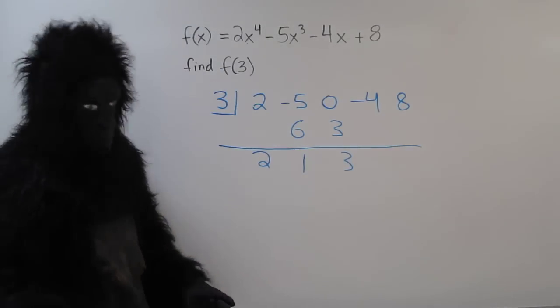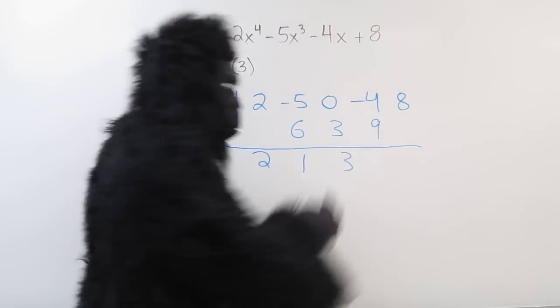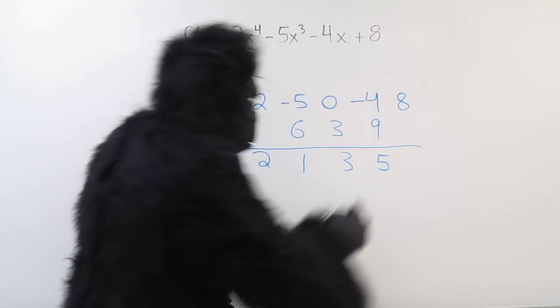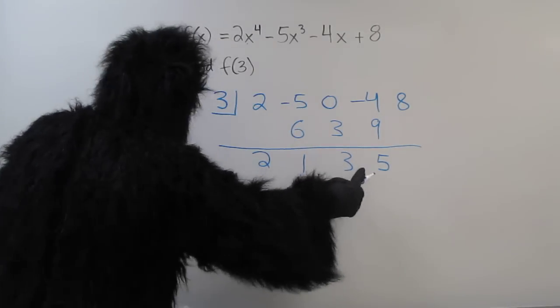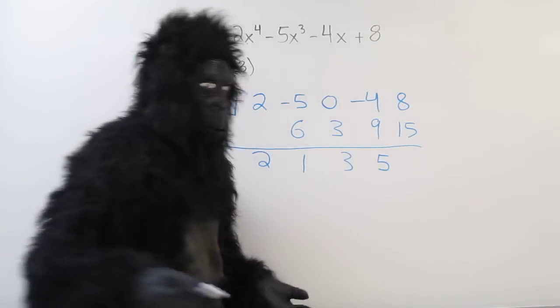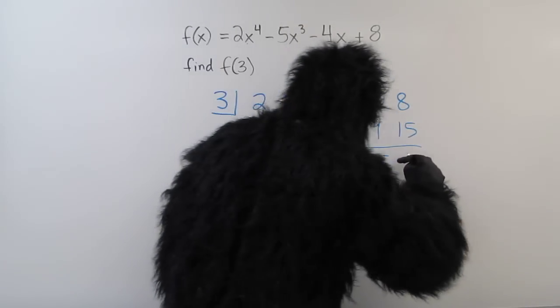Now back to multiplying. 3 times 3 is 9. Back to adding. 9 plus negative 4 is 5. And one more multiplication. 5 times 3 is 15. And our last adding. 8 plus 15 is 23.